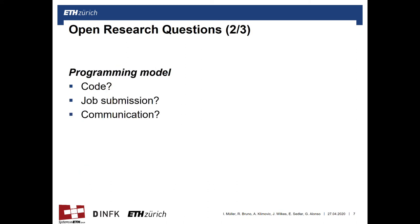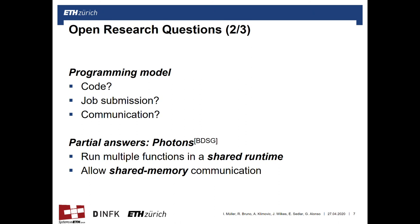There's also a set of research questions around the programming model. How should the code be deployed? How should jobs be submitted? How should communication be exposed? Maybe existing systems such as Yarn or Slurm do the trick, or maybe we need something new. We have a partial answer: in a different project we built a runtime system called Photons, where different functions of the same client can run in the same process and thus communicate through a shared memory mechanism. And that's not only faster, but also more explicit to the user.